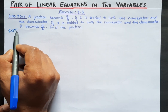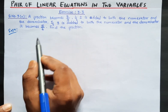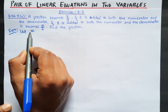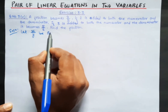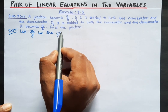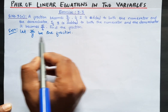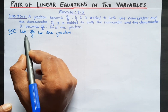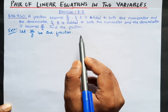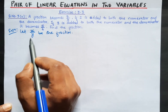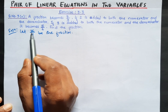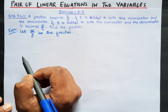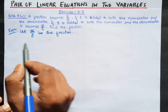Let x by y be the required fraction. Here x is the numerator and y is the denominator. So our fraction is x by y. We let x be the numerator and y be the denominator, so the fraction is x by y. Now according to the question, let's look at Case 1.